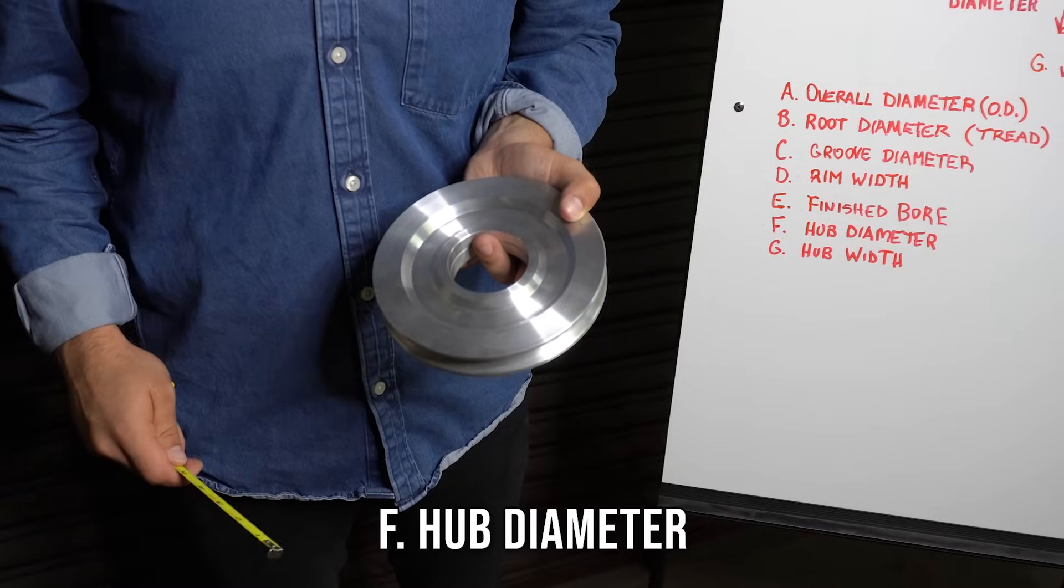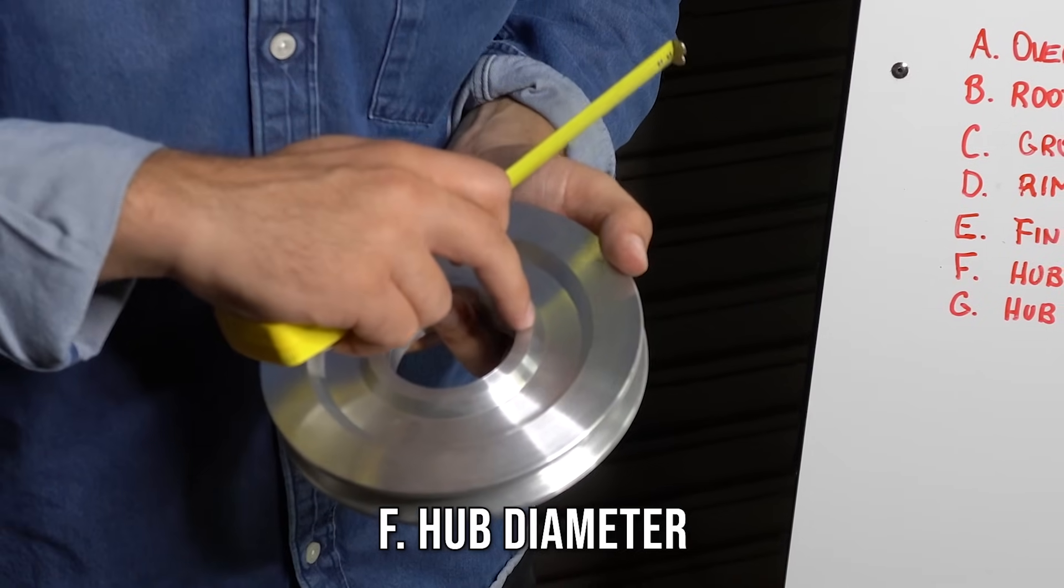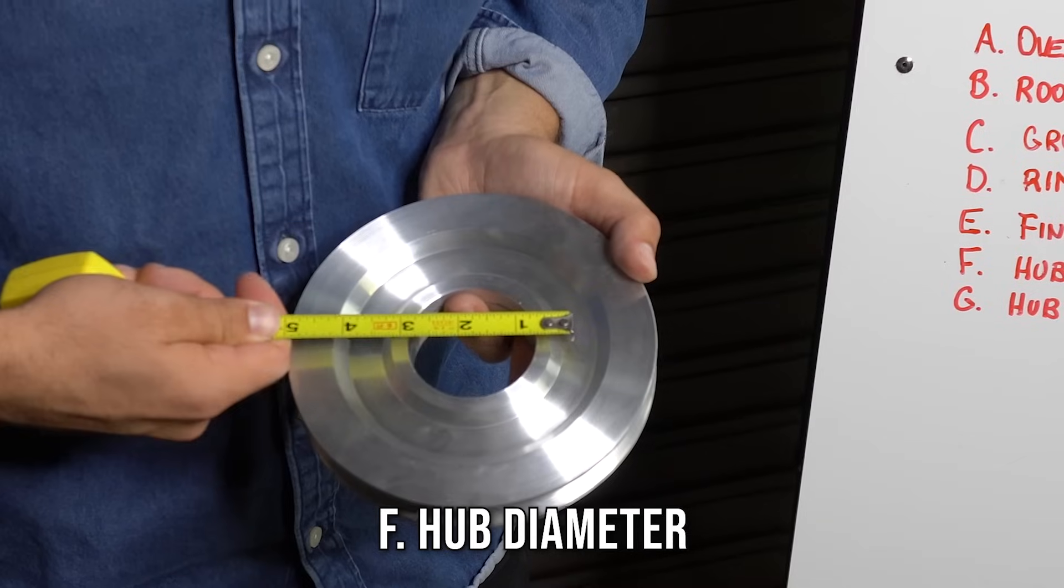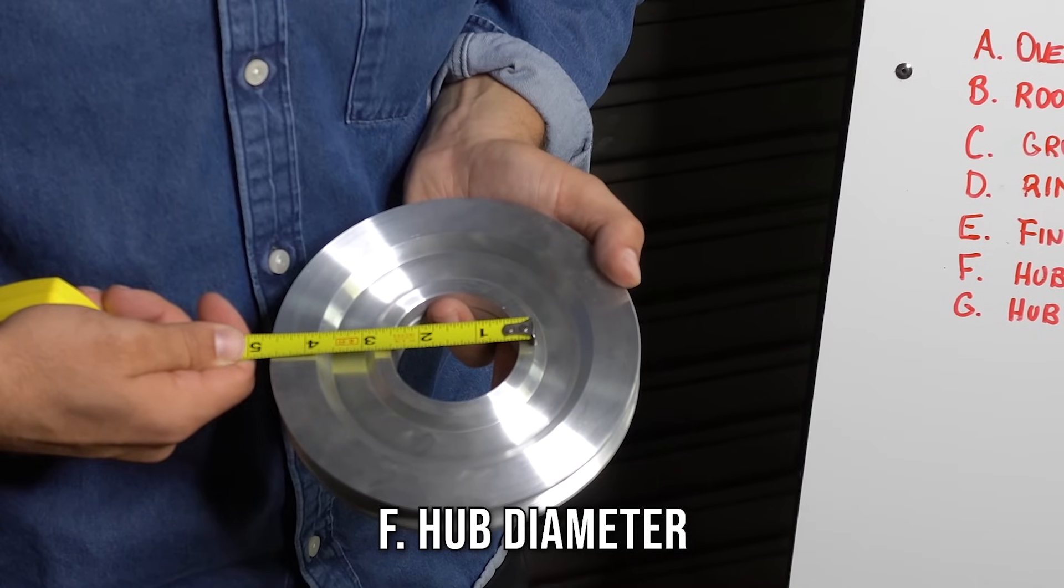Next we have the hub diameter. That is from this ridge to this ridge. This one is two and three quarters.